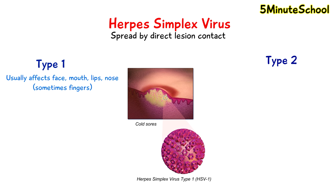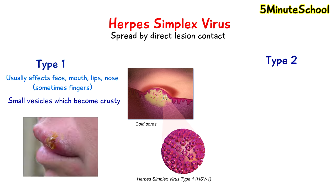Sometimes the fingers are also affected with herpes simplex type 1. The lesions which occur are small vesicles and they can become crusty in appearance. Sometimes the appearance of these lesions can also occur alongside swollen lymph nodes.